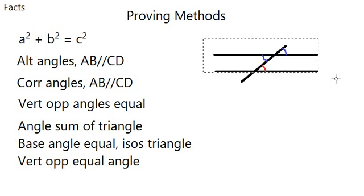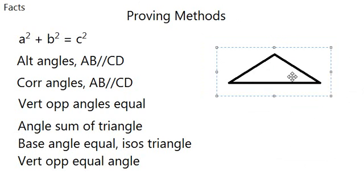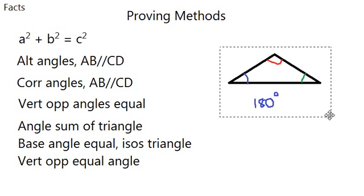Now I can show you angle sum of triangle. Here we have a triangle. What that means is that three angles, this angle, this angle, and this angle, add together to form 180 degrees. This is always true. It always forms 180 if it's a triangle.